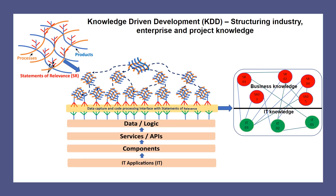Industry knowledge is inherently stable and can be specified by a common hierarchical structure that can be extended to cover enterprise and project knowledge. The industry knowledge structure can be used to learn multiple domains scientifically using the same structure.